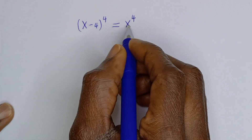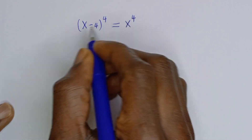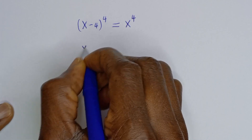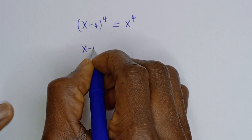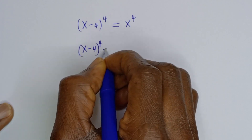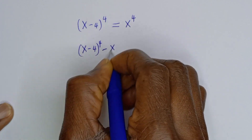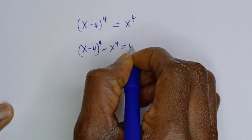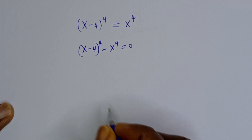Let's take this x to the power of 4 to this side. We have x minus 4 to the power of 4 minus x to the power of 4 is equal to 0.